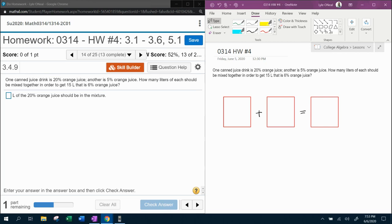It says one canned juice drink is 20% OJ. Another is 5% OJ. How many liters of each should be mixed together in order to get 15 liters that is 6% OJ? So what I've done is I've recopied this word problem over here in my workspace.